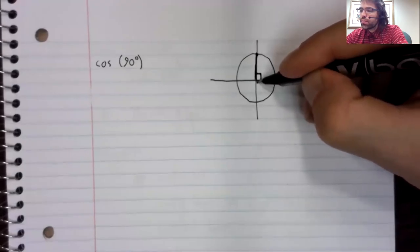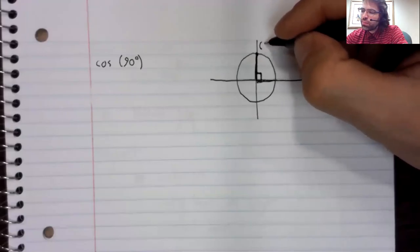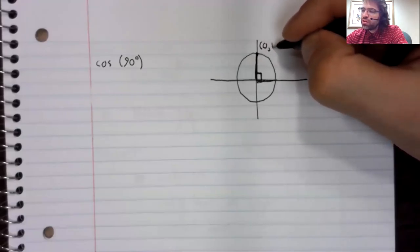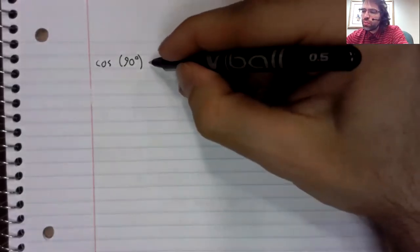but 90 degrees is our right angle. And bearing in mind that this is the unit circle,